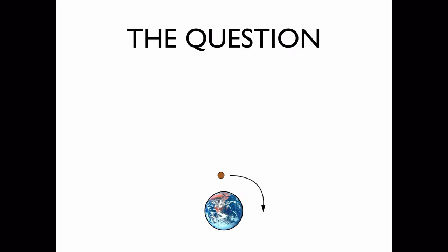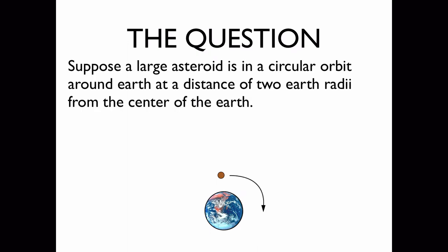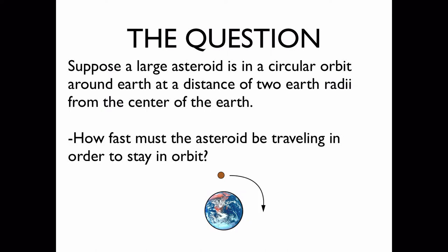The question. Suppose a large asteroid is in a circular orbit around Earth at a distance of two Earth radii from the center of the Earth. We'd like to know, how fast must the asteroid be traveling in order to stay in orbit?